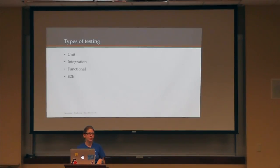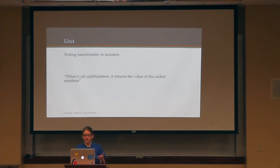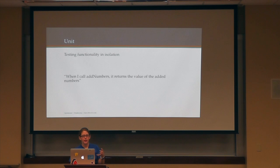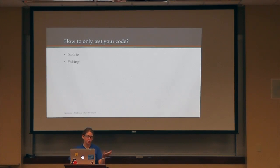Talking about the different types of testing. Unit testing is testing functionality in isolation. When I call my function — say, add numbers — it returns the value of the added numbers. It describes the behavior of the function or the functions inside the module. You're testing your code to see if it does exactly what you say it does at the modular level. The key is that you are testing your code, not other people's code — theoretically you should use libraries that have good test coverage. When you're evaluating frameworks and things, always look for test coverage.